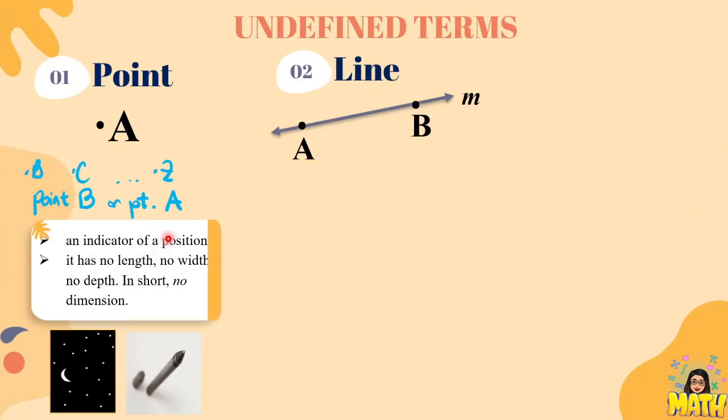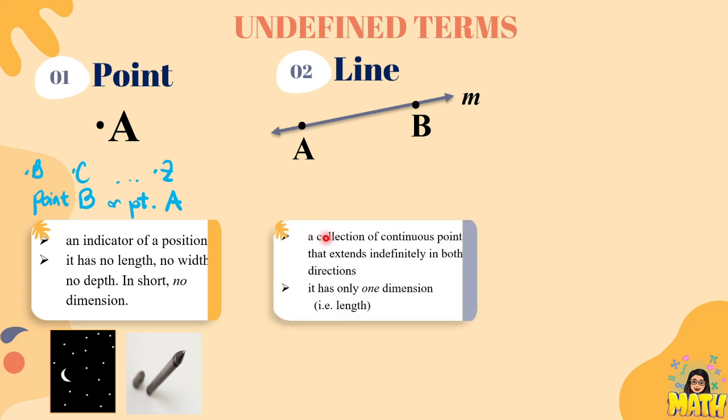Another undefined term is what we call the line. The line is a straight line with two arrow points on both ends. It is a collection of continuous points that extends indefinitely in both directions. Kaya siya may arrow doon sa magkabilang dulo. Actually, it has infinite points in between pero dito ay dalawa lang yung points na pinangalanan natin, just like point A and point B.